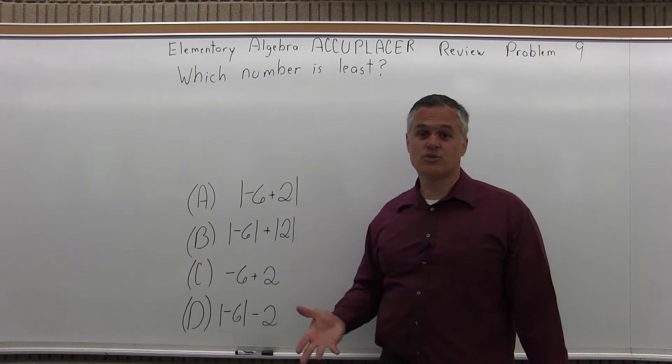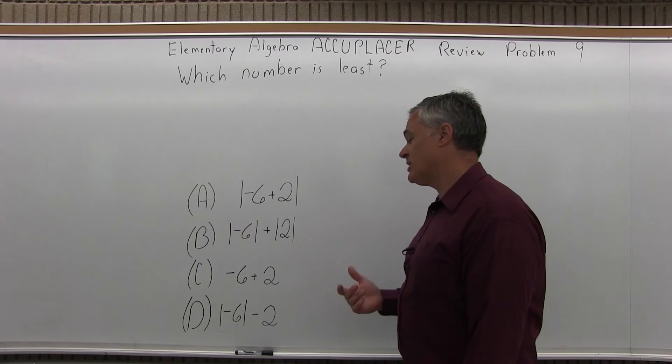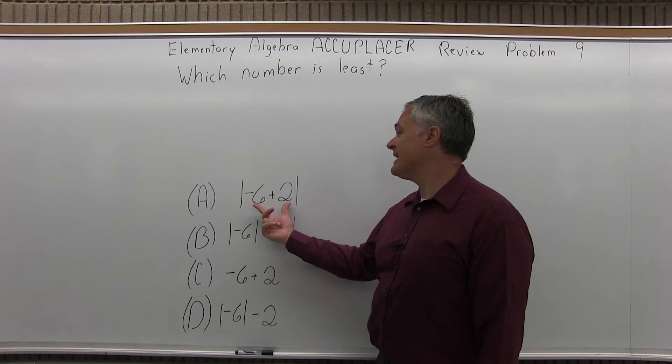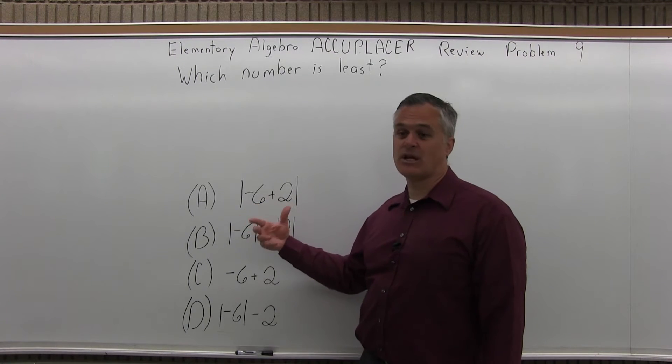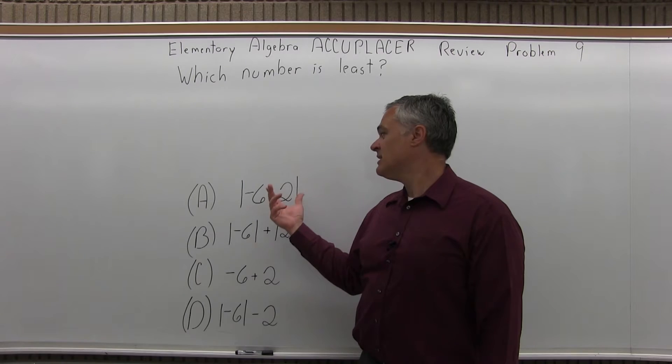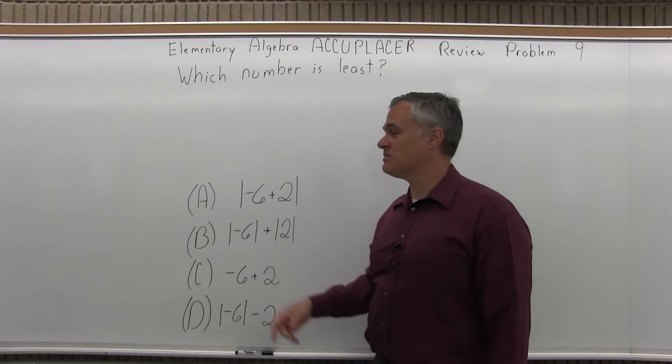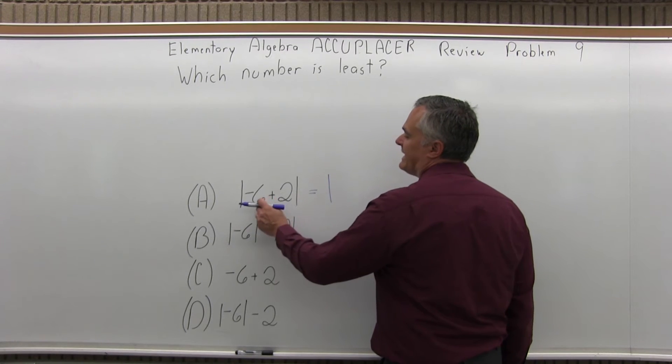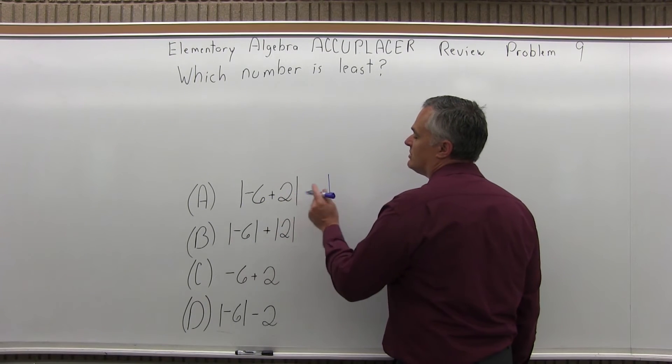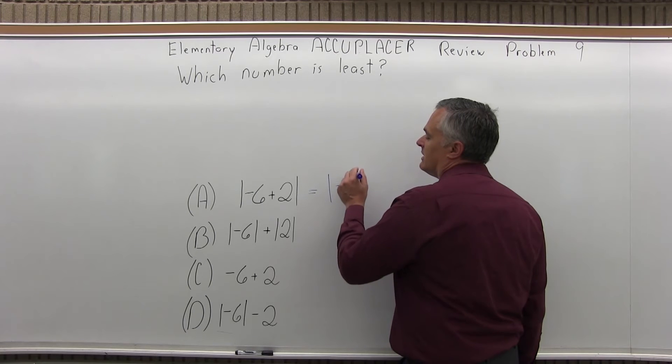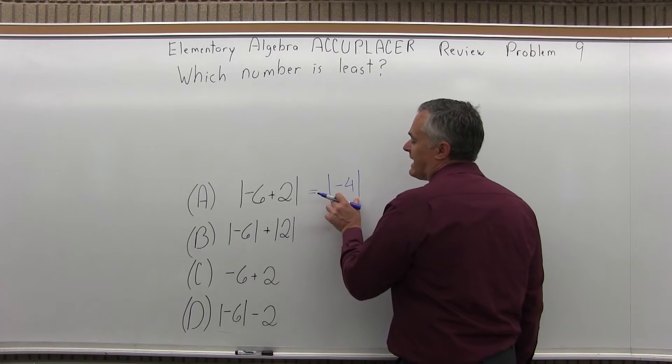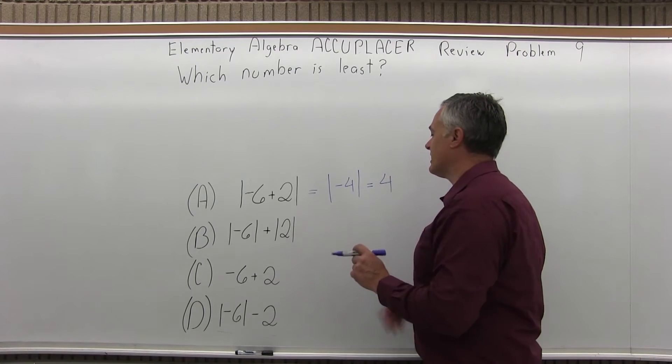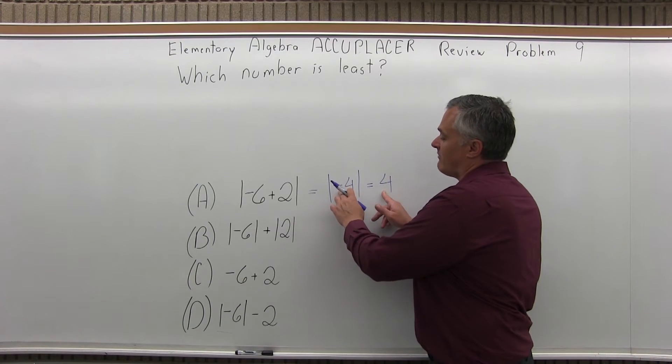The least or smallest, we want to consider each one and see what they come out to. So option A, we have the absolute value of negative 6 plus 2. Again the long vertical lines are for absolute value, which means keep the number the same but make sure the answer is positive. So this is going to be absolute value of negative 4, and the absolute value of negative 4 keeps the number the same as 4, but I made it positive.